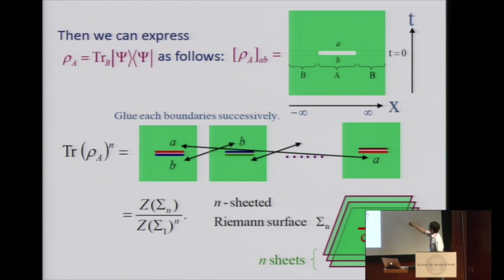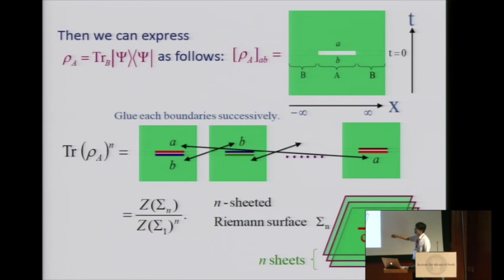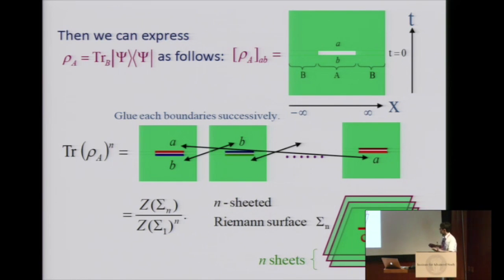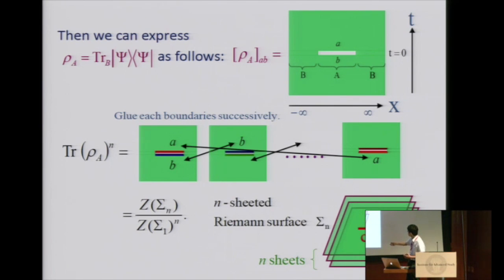Computing trace of rho_A to the n corresponds to a pasting procedure — we identify the lower cut with the upper cut on the second sheet. Since we have rho_A to the n, we have n copies, these are the replicas, and we paste them with each other cyclically. In the end we have a manifold without boundary — an n-sheeted Riemann surface. Going around the cut takes you to the second sheet, third sheet, and so on. This is written in terms of the partition function on this manifold, divided by the vacuum partition function as normalization.